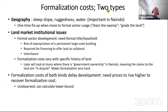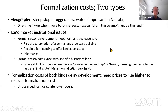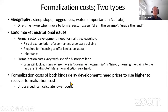Another formalization cost is that we think you need a private title to develop so there's no risk of expropriation, you can get a loan using your land as collateral, and inheritance rights are well-defined. Getting formal title can be very difficult, depending on the process of formalization of land markets. These formalization costs delay development because you've got to have enough revenue to recover them.